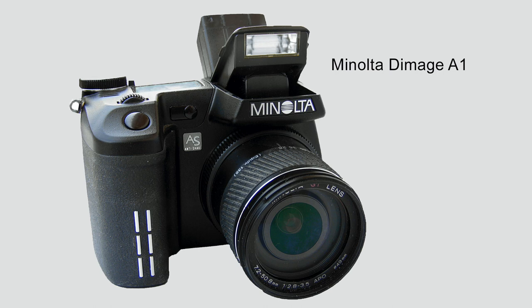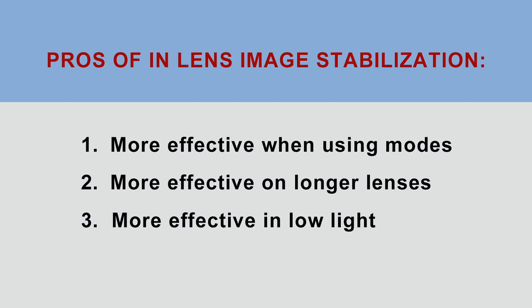Now you might be wondering which one is better, or if there is any difference between in-body and in-lens image stabilization. Let's look at the pros of in-lens image stabilization. Nikon and Canon both claim that with the fine-tuning of the modes we discussed earlier, in-lens image stabilization is more effective than in-camera. They also say it is more effective on longer lenses, and it is more effective in low light when it comes to accuracy of autofocus and metering, since the image comes already stabilized from the lens.